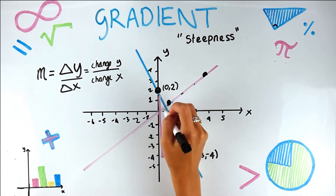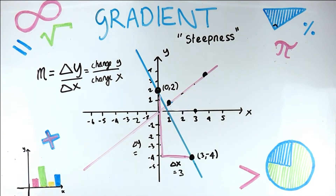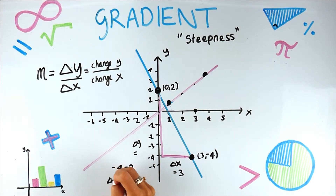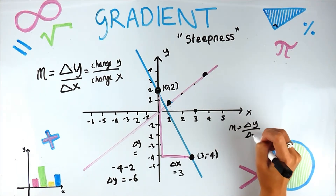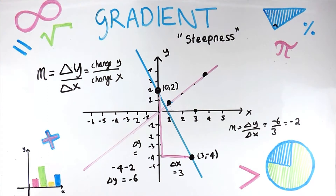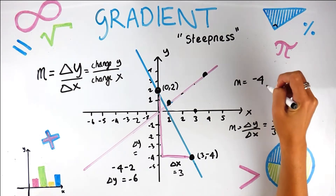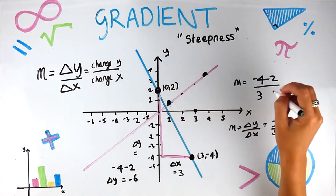The change in x is three. Now for the change in y, we have to consider the sign: we've gone from minus four, then we subtract two. So delta y is minus six. Putting that into our equation: delta y over delta x = minus six divided by three, which equals minus two. Written fully: change in y = −4 minus 2, over change in x = 3 minus 0, giving us minus six over three equals minus two.